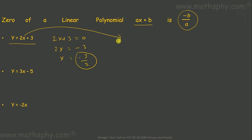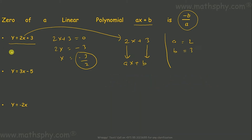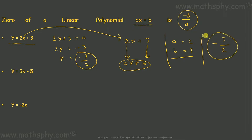Without doing that exercise, if I have to find the zero directly, let's write 2x plus 3 in the format ax plus b. Here a is 2 and b is 3. The zero of a linear polynomial ax plus b is minus b over a. So minus b over a gives minus 3 over 2 — the same result.